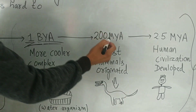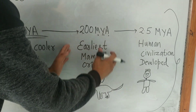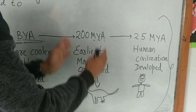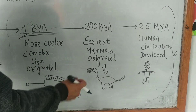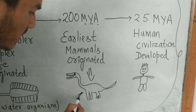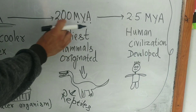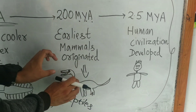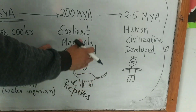Around 200 million years ago, the earliest mammals appeared. Dinosaurs also originated around this time — however, note that dinosaurs are not considered mammals; they are reptiles. Dinosaurs were the most dominant creatures during this age.